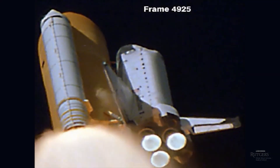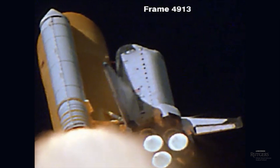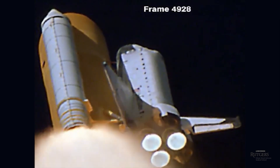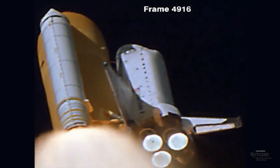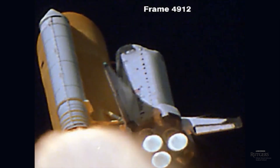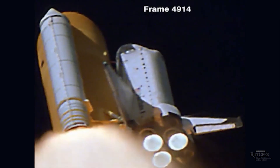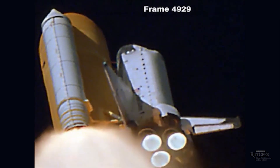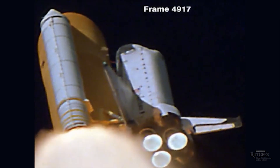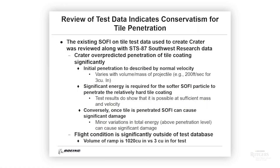During the January 2003 spaceflight of the shuttle Columbia, 82 seconds after liftoff, a nearly 2-pound piece of foam insulation broke off from the liquid fuel tank and hit the left wing. To help NASA officials assess the threat, Boeing Corporation engineers prepared several PowerPoint presentations. This is an example slide from one of those Boeing presentations.